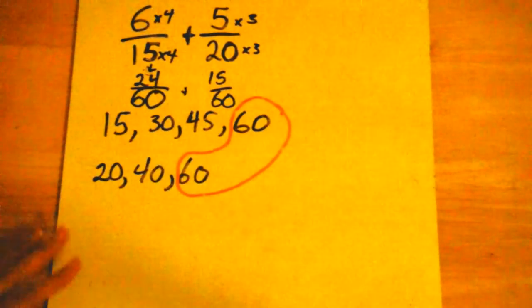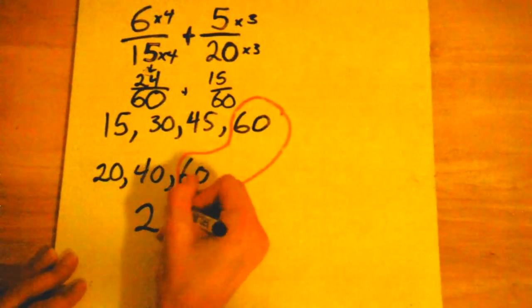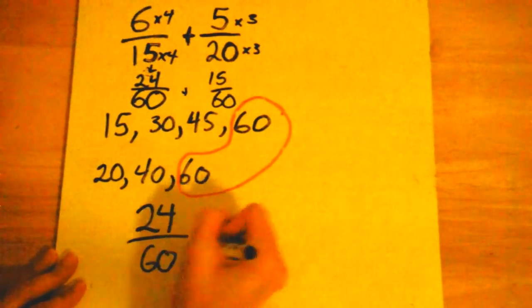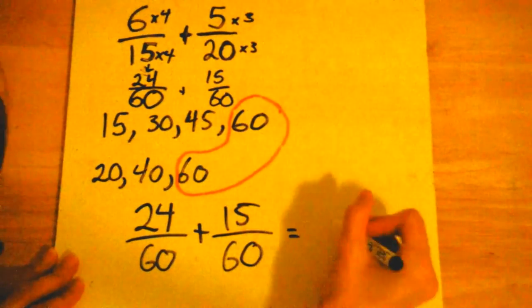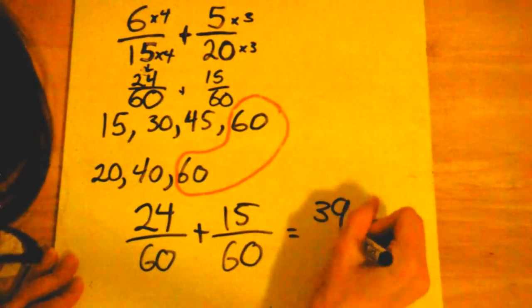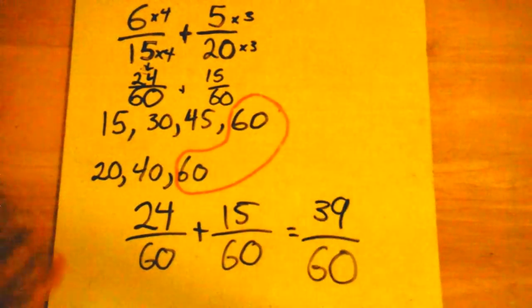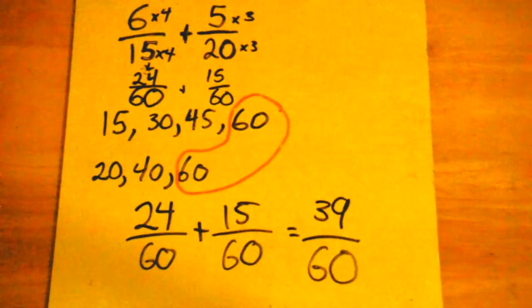I'm going to rewrite this down here just so there's enough room. So I have twenty-four sixtieths plus fifteen sixtieths. I now have common denominators, and I get thirty-nine sixtieths to help you add fractions with unlike denominators.